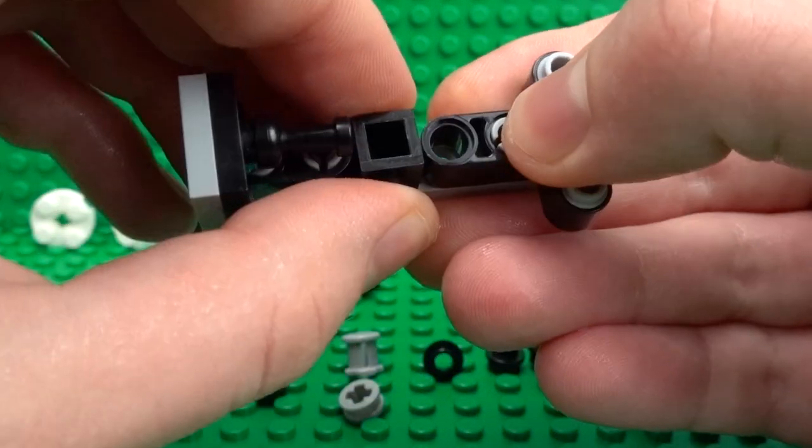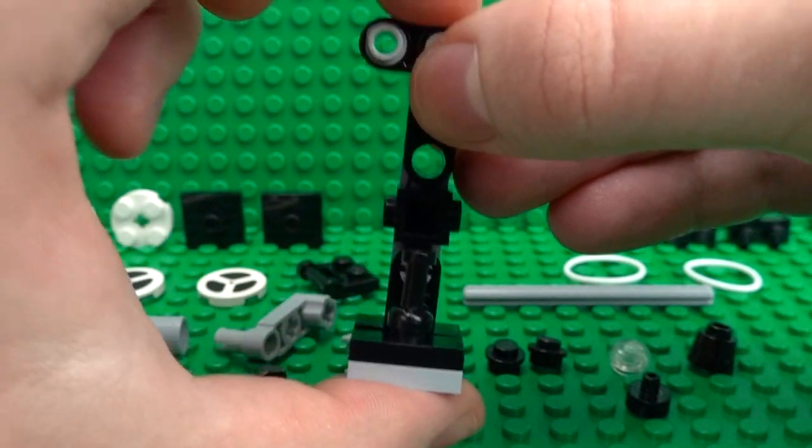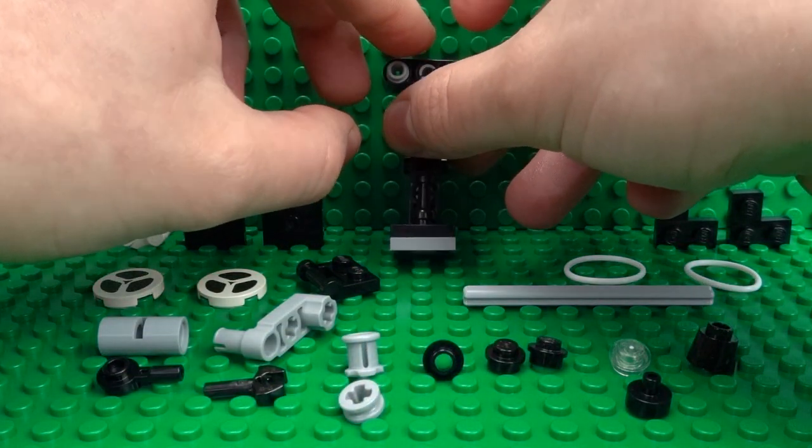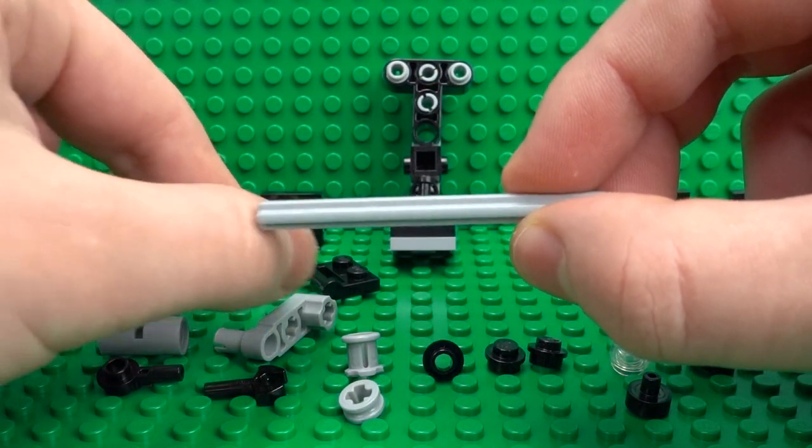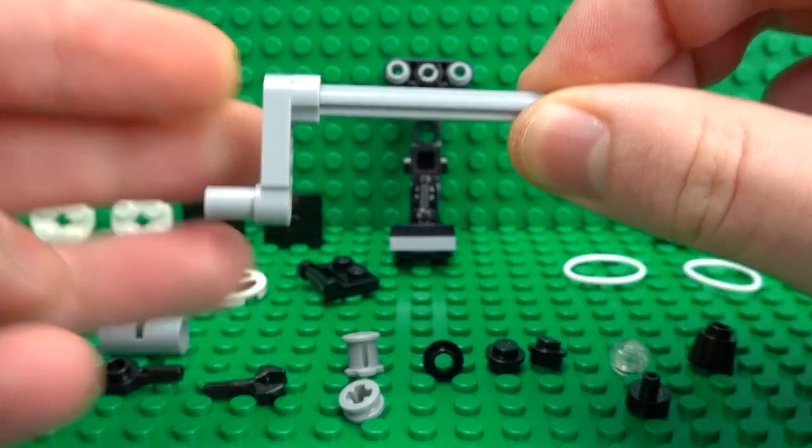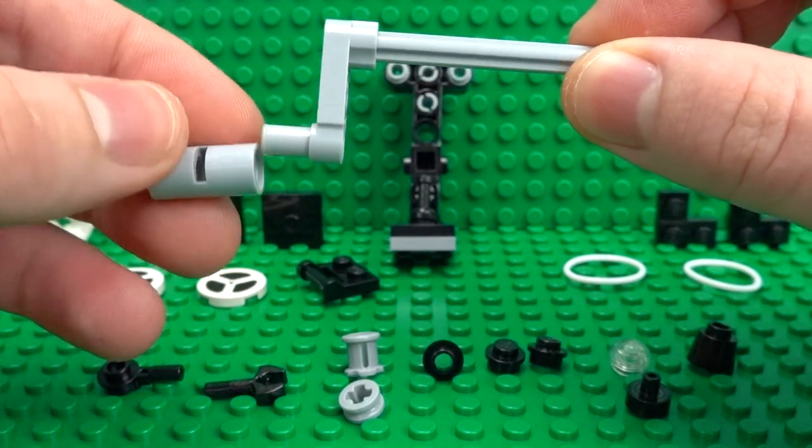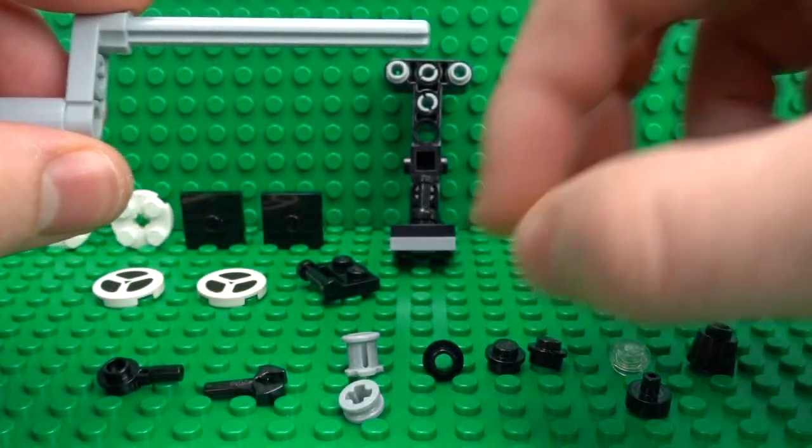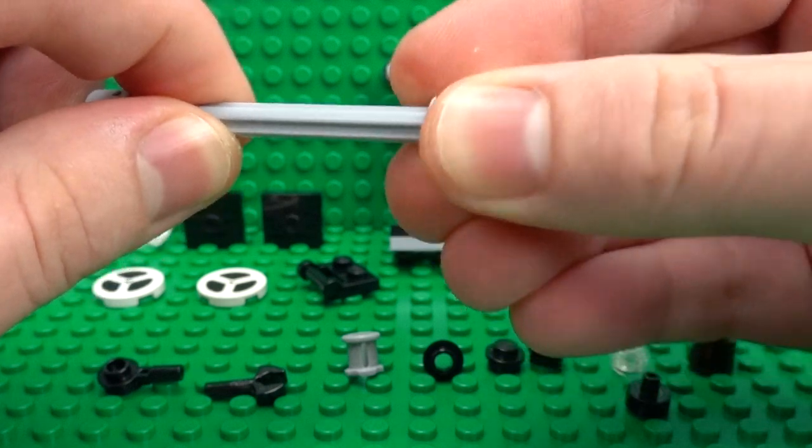You might need to adjust it just a fraction, but that's looking pretty good for now. Next, we'll continue building up the actual mechanism, which we'll use this one by seven axle with this handle piece and then a one by two connector to act as a spinning handle.